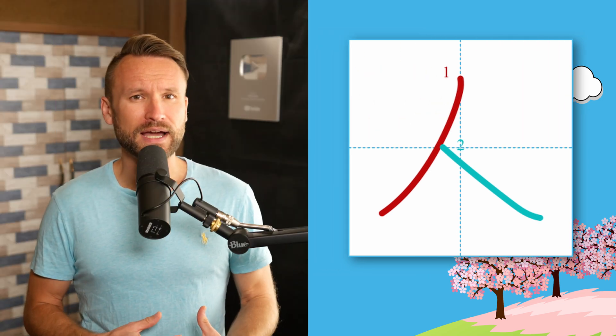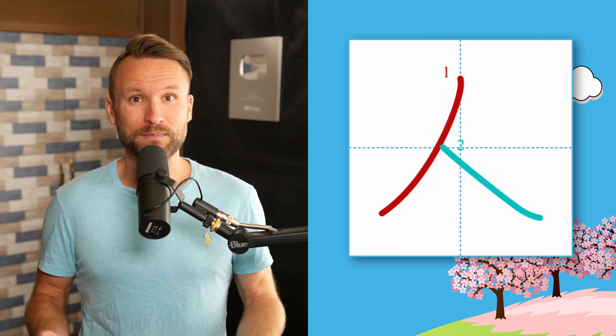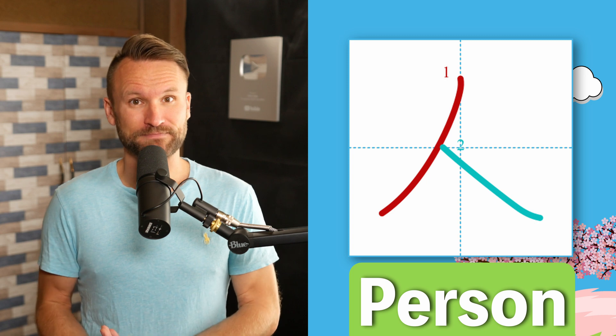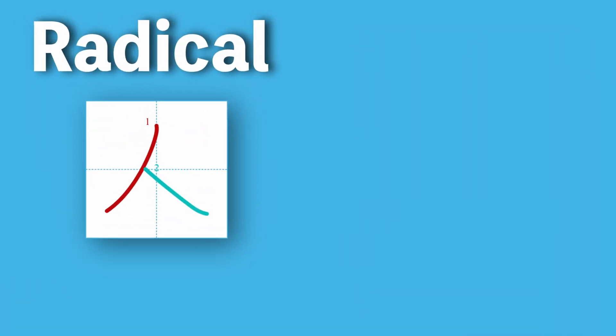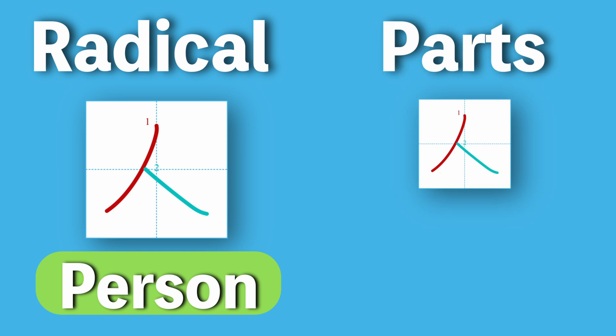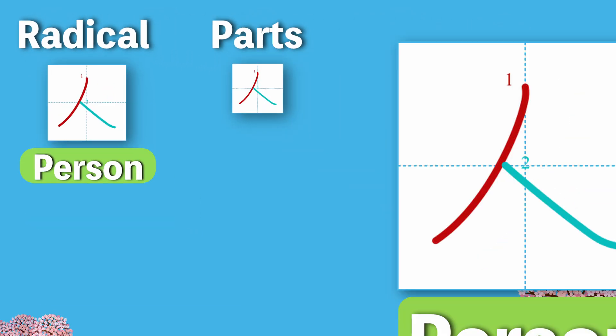You'll see this simple-looking kanji everywhere because it means person. The official radical for person is person. Since it's also a radical, that means we'll be seeing it a lot in other kanji in the future. While you could think of this like a no leaning on a mirror, we're going to leave this one as it is, making person person's only part.